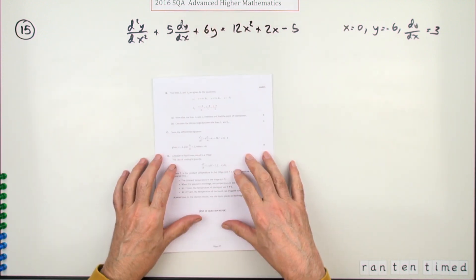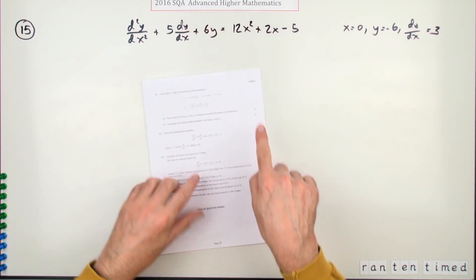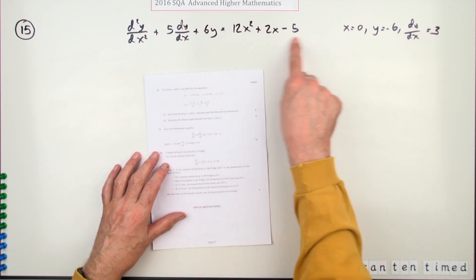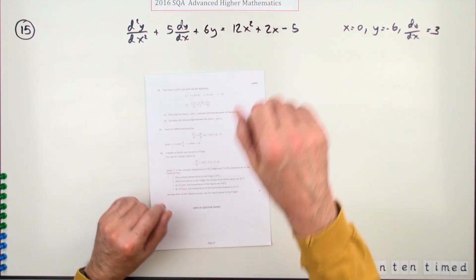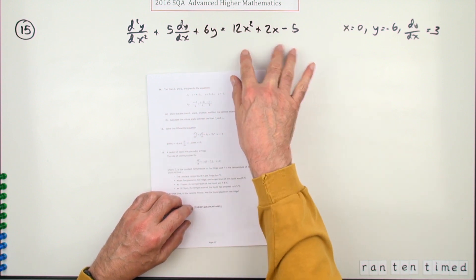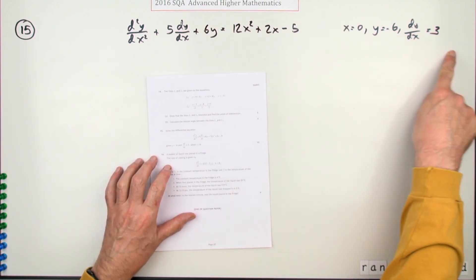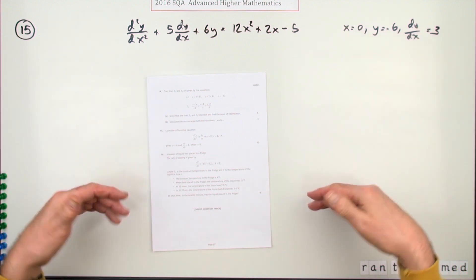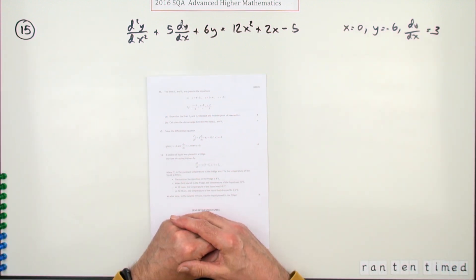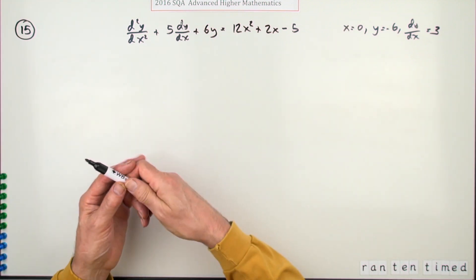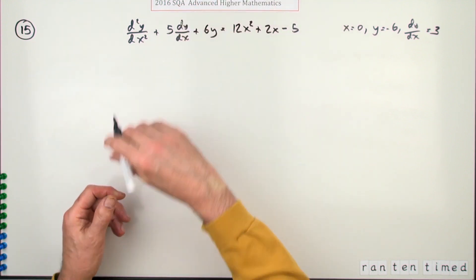Number 15 then from the 2016 advanced math. 10 marks for the second order differential equation. It's not bad because you've got this little polynomial over here on the right hand side, so that's not going to clash with something you've found previously. And given these initial conditions, you can go all the way down to a particular solution.